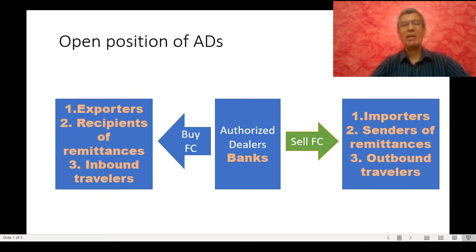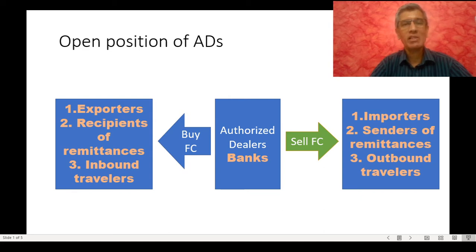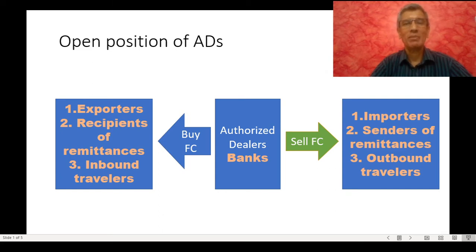Hello and welcome again to our next session on foreign currency transactions. In the earlier sessions we saw that foreign currency is a commodity. We also saw the role of banks as authorized dealers of foreign currency. Authorized dealers buy and sell foreign currency — they buy from exporters, from recipients of inward remittance, and from inbound travelers. They sell foreign currency to importers, to senders of outward remittance, and to outbound travelers at the rates we saw in the previous session.